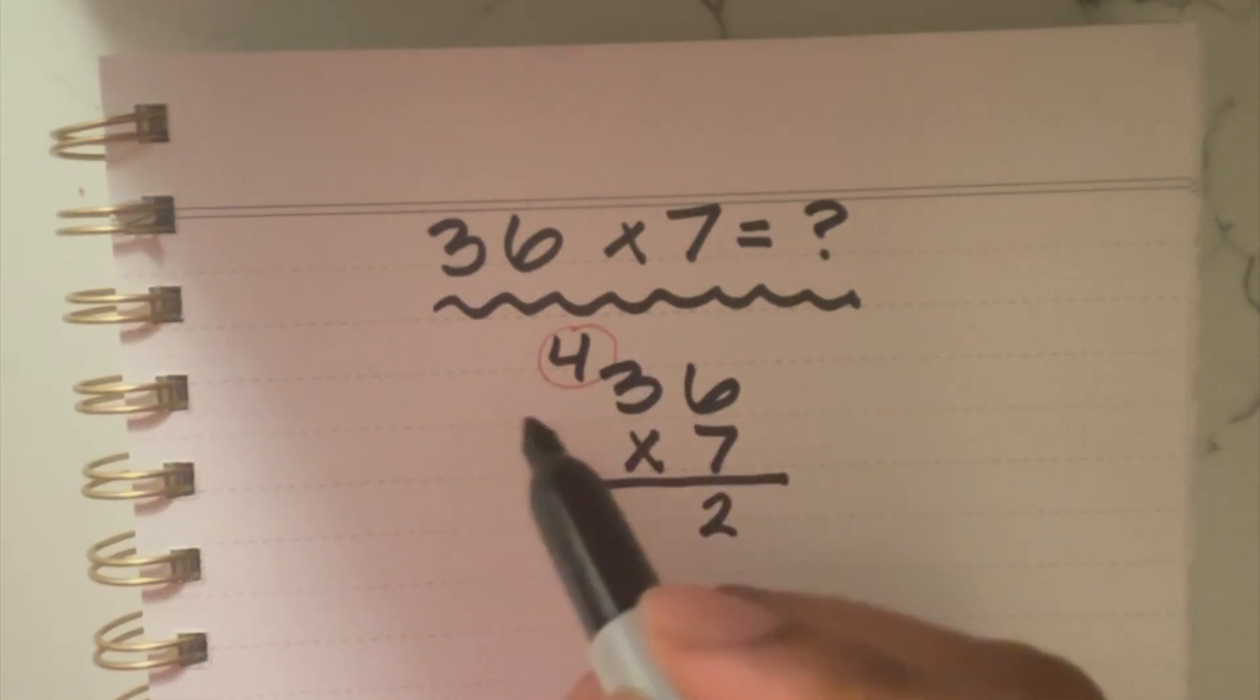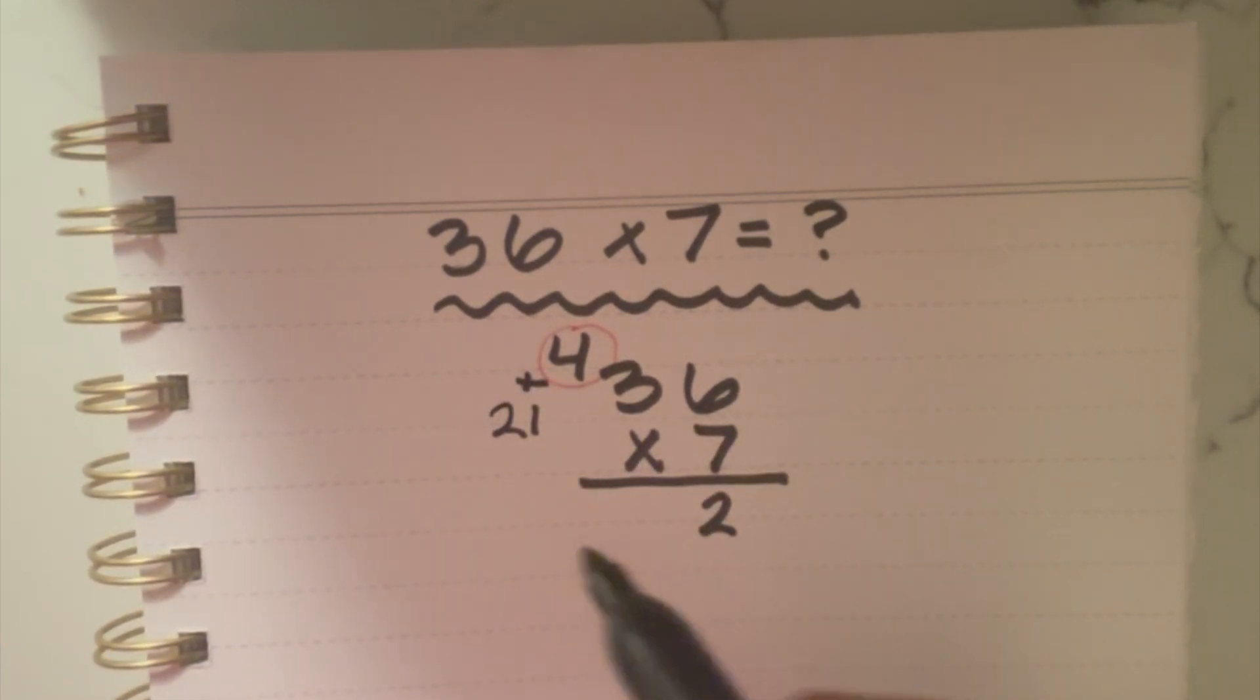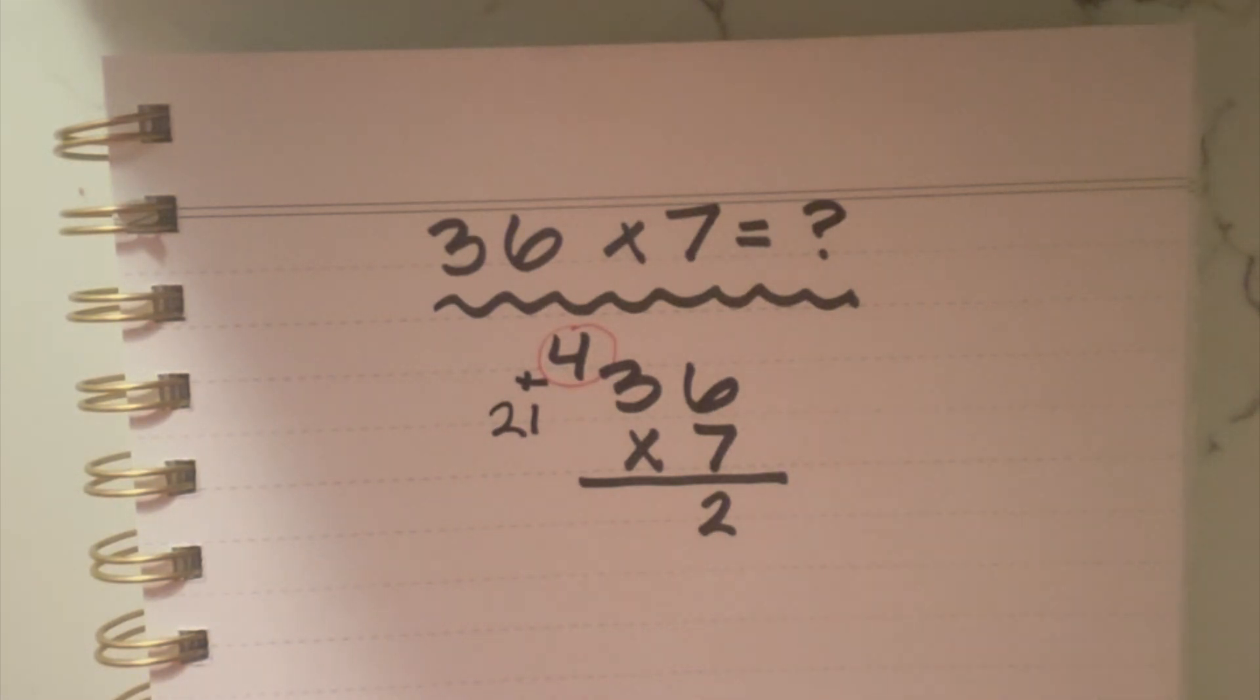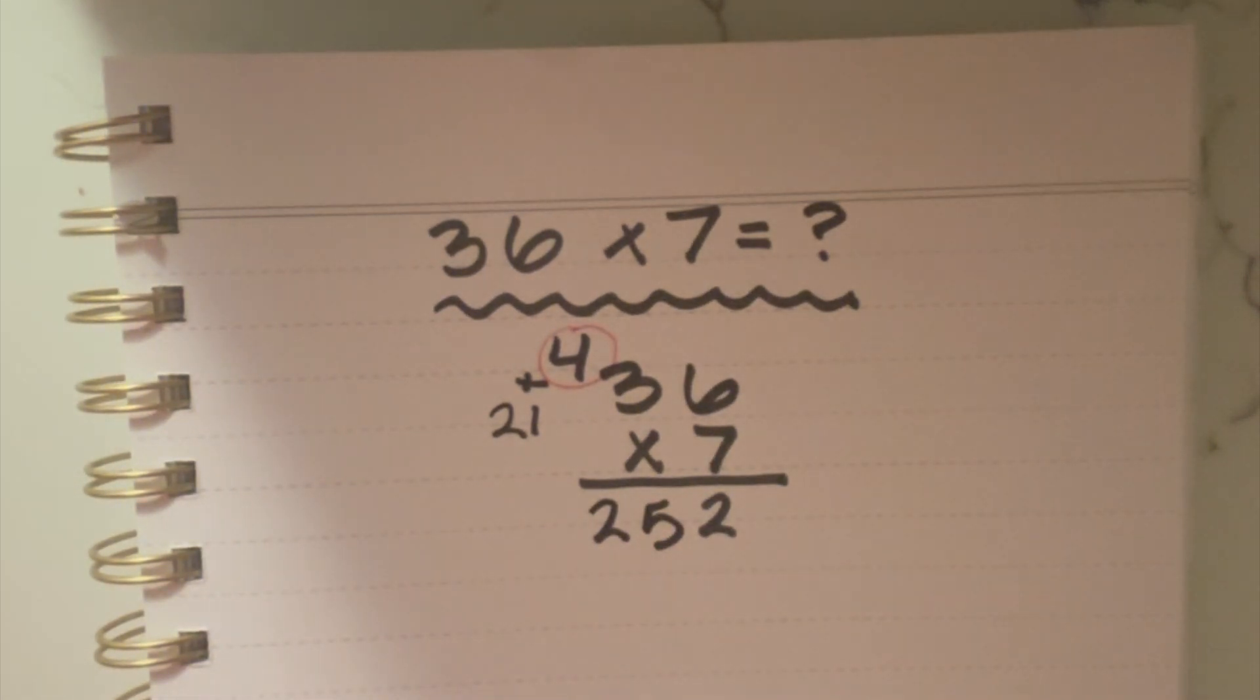So 7 times 3 is 21, and we're adding that to 4. When we do that, we get 25, because 21 plus 4 is 25. That's the number that comes down here: 2 and 5. And that is our final answer.